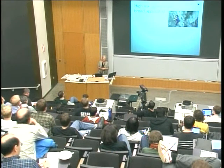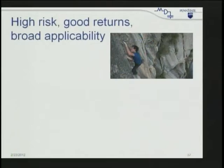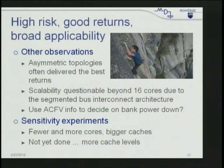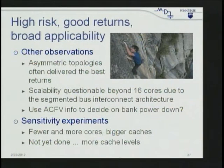Morph Cache has high risk — you have to redesign the bus interconnect — but good returns and broad applicability. Asymmetric topologies often deliver the best returns. Scalability beyond 16 cores is a question since it uses bus interconnect. One promising future direction: using ACFV information to decide on cache slice power-down — merge a low-utilization slice and power it down to save leakage energy.